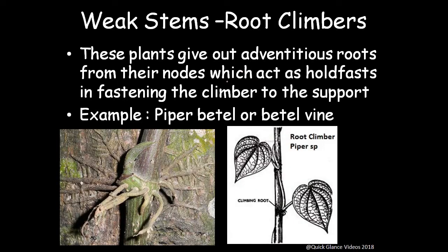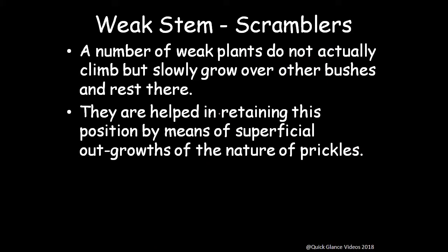Another form of weak stem is root climbers. These plants give out adventitious roots from the nodes which act as holdfasts, fastening the plant to its support. A common example is pepper beetle or betel vine. As it clings toward the support, it gives adventitious roots and acts as both a root and a climber.